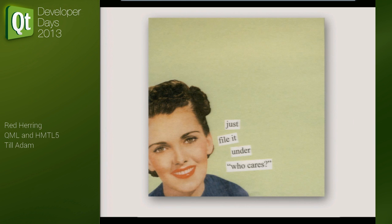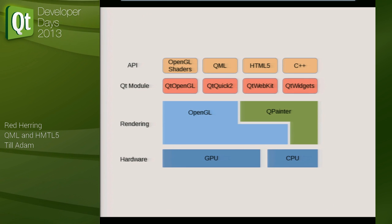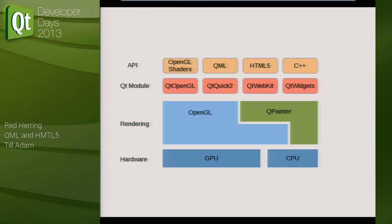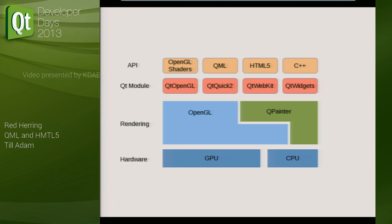It is really not a relevant question — it's a red herring, as they say. That's why I had that on my first slide. Here's why: Qt comes with a whole bunch of stuff. There's the hardware down there, the GPU and CPU, you've got some rendering on top of that — the old QPainter stuff which is C++ mostly, and the OpenGL stuff. You can go through the GPU directly, which is nice and fast, or through the CPU. Then you've got Qt modules for doing GL directly, Qt Quick, WebKit, and widgets. You can use shaders, describe your UI in QML, in HTML5, or use C++.